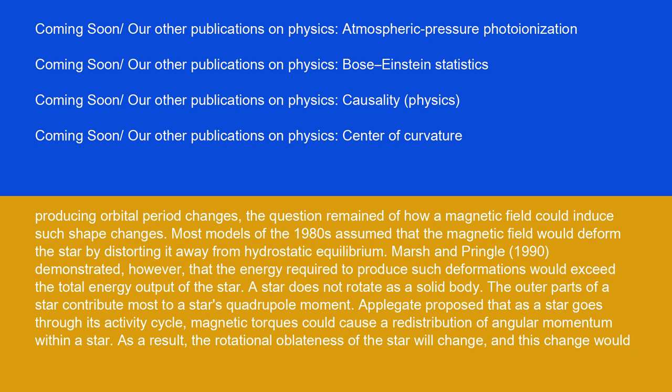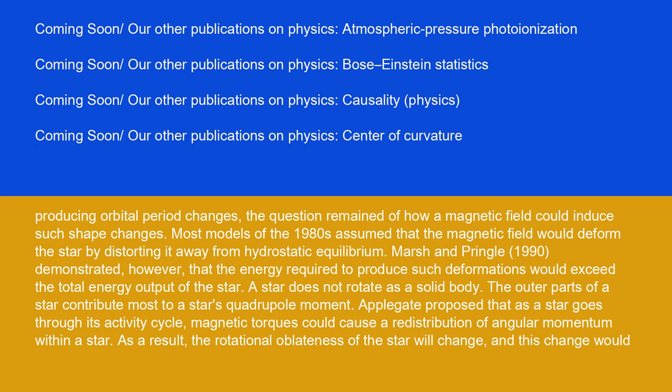A star does not rotate as a solid body. The outer parts of a star contribute most to a star's quadrupole moment. Applegate proposed that as a star goes through its activity cycle, magnetic torques could cause a redistribution of angular momentum within a star. As a result, the rotational oblateness of the star will change, and this change would ultimately result in changing the orbital period via the Matese and Whitmire mechanism.